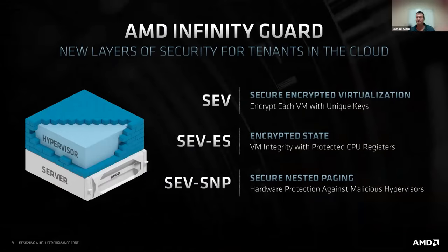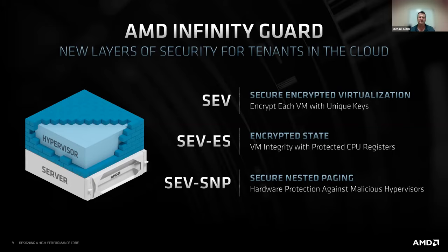Now we'll segue into security and our Zen 3 design, our journey in security. We started in the original Zen with our Secure Encrypted Virtualization (SEV), where each virtual machine has its own unique key as well as the hypervisor. None of the memory is visible between virtual machines, and the hypervisor itself cannot inspect the memory of the virtual machines. With the next generation, we added encrypted state: as we switch in and out, the state of the machine ends up in memory, and with this technology that state is encrypted as it's put in memory. Therefore the hypervisor can no longer see any of the state of the VM, and a malicious hypervisor cannot manipulate that state in a way that would violate the security of the VM.